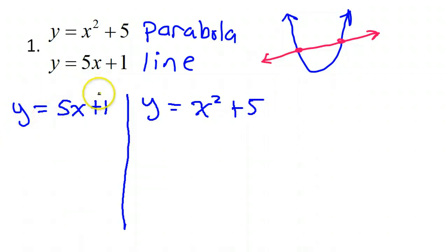So then we take the expression that the variable is equal to, and we substitute it into the other equation for that same variable. If I do that, then this equation becomes 5x plus 1 equals x squared plus 5. Alright, now we have no more y's. We have only x's. So we should be able to solve this.